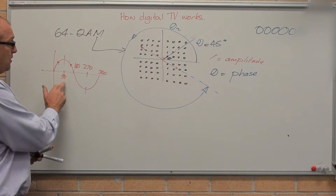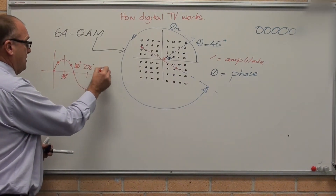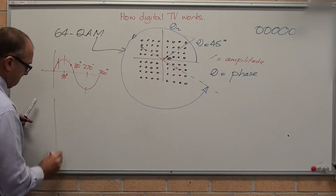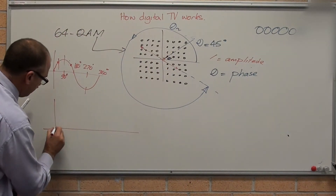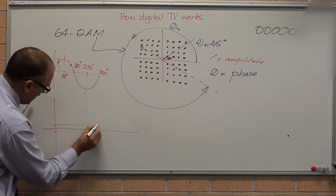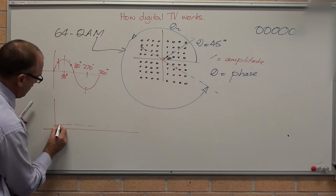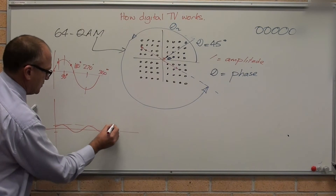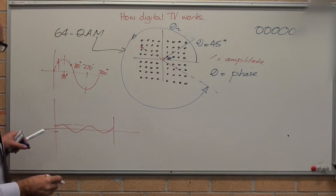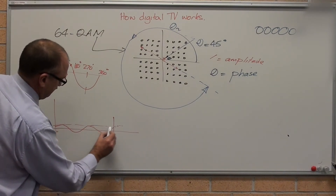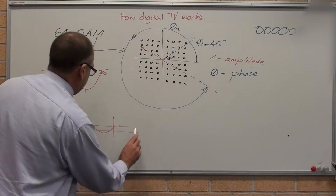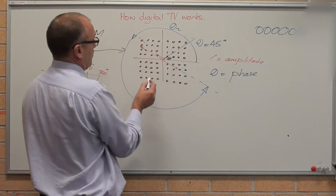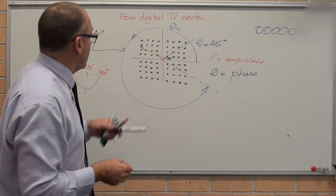The modulation of the first wave might be at 45 degrees with a very small amplitude. The second signal might be at 135–141 degrees with a fairly large amplitude, going on the downstroke. The third one is around 315–325 degrees, on the upstroke, with a medium amplitude. Each of these successive waves has a different phase and amplitude combination representing a different binary value.